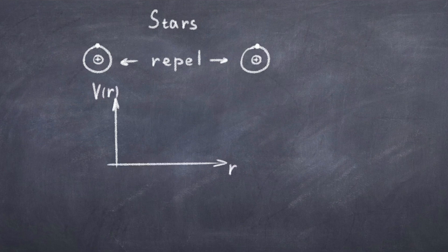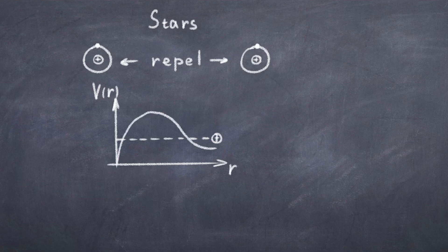It turns out that this repulsion leads to a Coulomb barrier similar to the double well potential, which we discussed in the video about tunneling. Because this barrier is so big, it is almost impossible for the nucleons in the stars to overcome this repulsion. What saves this process is quantum tunneling, which allows the nucleons to tunnel through the barrier and fuse together.